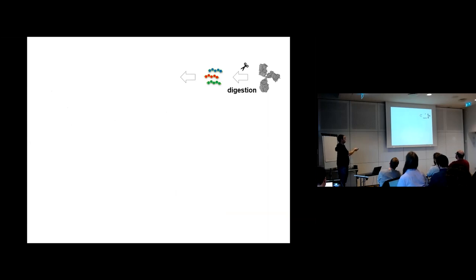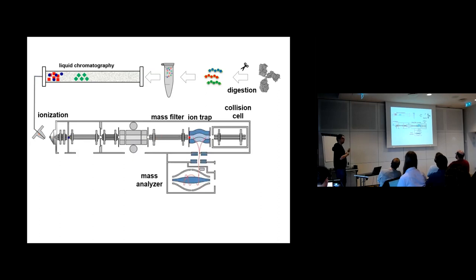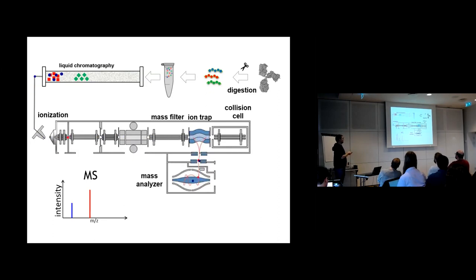Let's take a look at bottom-up proteomics. We start by digesting proteins into smaller peptides using an enzyme, for example trypsin. Then we place them into a column and the analytes get separated based on their physicochemical properties — for example, how hydrophobic they are. These analytes elute at a certain retention time from the column, get ionized, pass through ion optics in the mass spectrometer, and get collected. They are then channeled into a mass analyzer — in this case an Orbitrap instrument, where the frequency of oscillation is directly related to the mass-to-charge ratio.